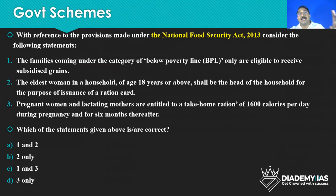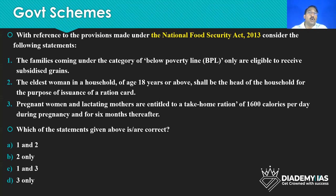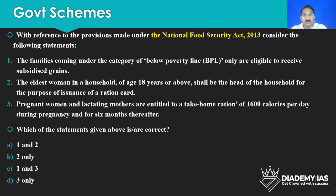In schemes, not all schemes are equally important. Flagship schemes that are in news and mostly successful ones are very, very important, requiring more detailed study. If there is a new scheme announced in the budget, just see the purpose, which ministry is running it, and who the beneficiaries are — just two or three aspects. But for old schemes like Pradhan Mantri Jan Dhan Yojana, National Food Security Act, or Kisan Credit Card — once they are in news and successful, you have to get into the depth because they will ask difficult questions from these.